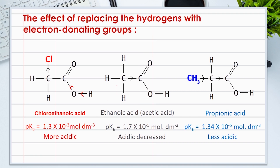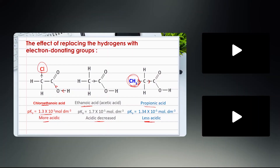In contrast, replacing the hydrogens of the methyl group of ethanoic acid with electron-donating groups decreases the acidity of carboxylic acids. Comparing the Ka values of ethanoic acid, propanoic acid, and chloroethanoic acid: chloroethanoic acid has an electron-withdrawing group, which makes it more acidic than ethanoic acid. Propanoic acid has an even smaller Ka value because of the presence of the electron-donating methyl group, making it less acidic.